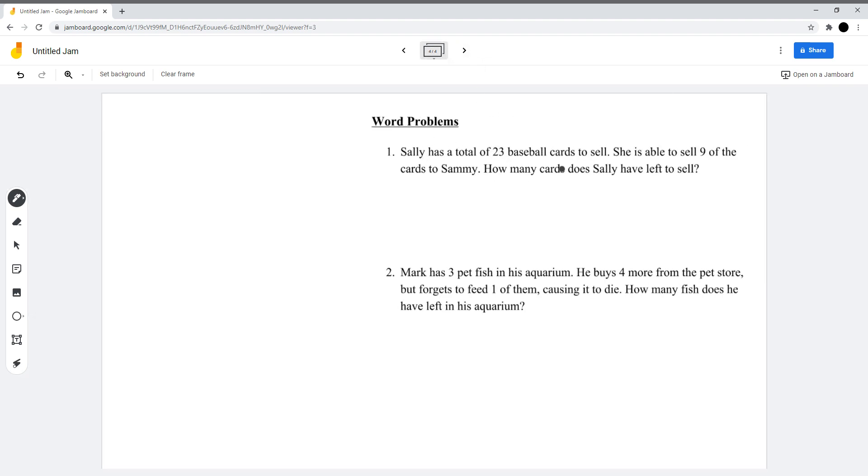Word problems. Sally has a total of 23 baseball cards to sell. She is able to sell 9 of the cards to Sammy. How many cards does Sally have left to sell? The equation for this is very simple. Write 23, and she sells 9 of the cards to Sammy. Just have to subtract this, subtract 9, and the answer is 14.